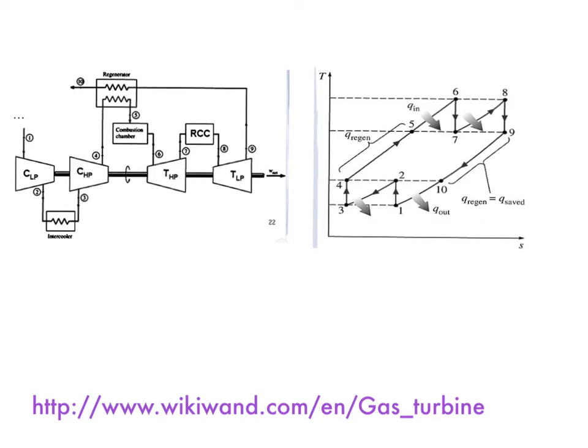So when you translate this physical diagram into this TS diagram, you will see that you are going to have three pressure lines. This one is the lowest pressure line.